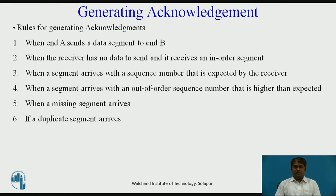The fourth rule: when a segment arrives with an out-of-order sequence number that is higher than expected, the receiver immediately sends an ACK segment announcing the sequence number of the next expected segment. This leads to fast retransmission of the missing segment. When the missing segment arrives, the receiver sends an ACK segment to announce the next sequence number expected.